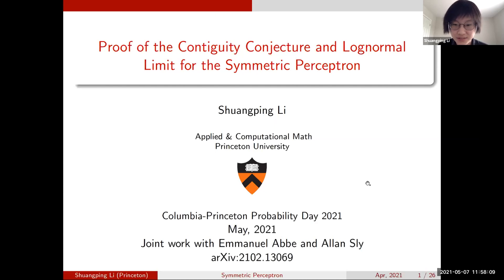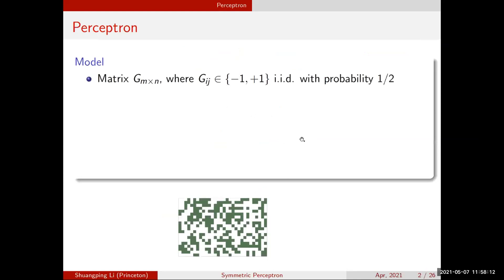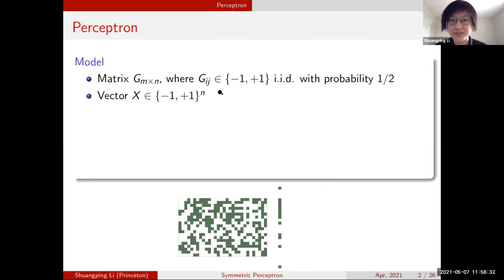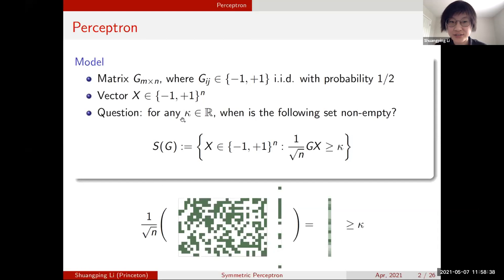We consider a matrix G that is n by n, where each entry G_ij is i.i.d. distributed equal to plus or minus one with probability one half. A green dot indicates the value plus one and a white dot indicates minus one. We then look for a vector x of length n where each entry also belongs to plus or minus one. For any kappa real, we ask when is the following solution set non-empty: we look for x such that G times x, normalized by one over root n, is entry-wise greater than or equal to kappa.